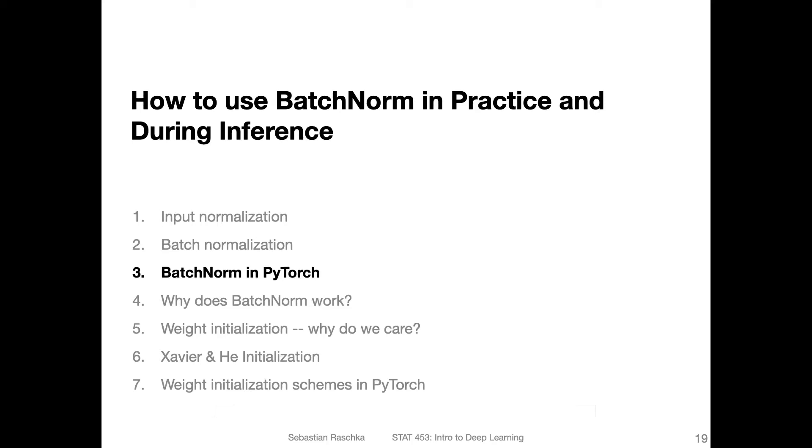Alright, let's talk about how we can use batch norm in practice. We will also talk briefly about how batch norm behaves during inference. During training we have mini batches, but that's not necessarily the case if we want to use our network for prediction. Sometimes we only have a single data point, so how would that work? First, let me show you how batch norm works when we use PyTorch.